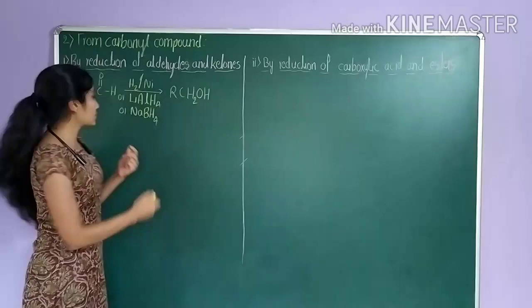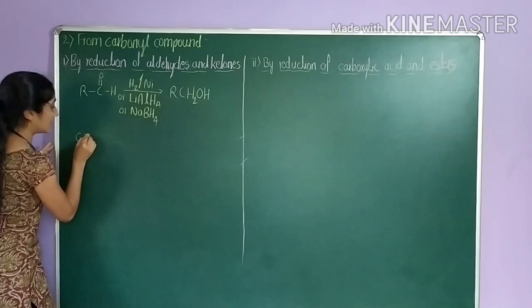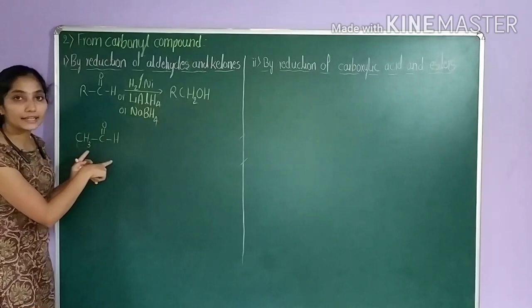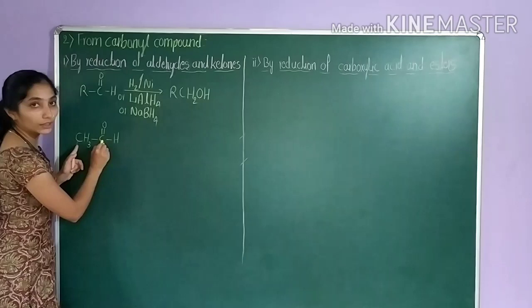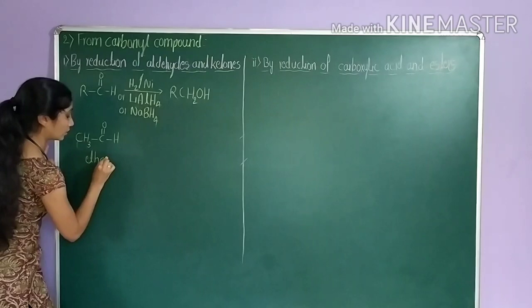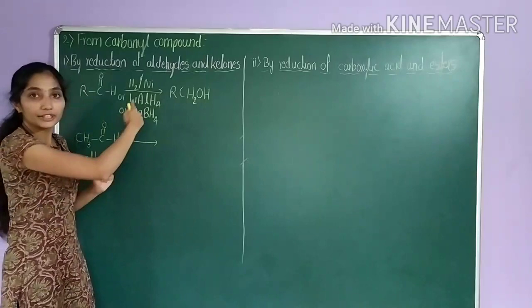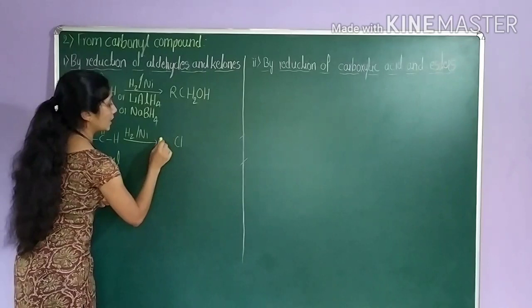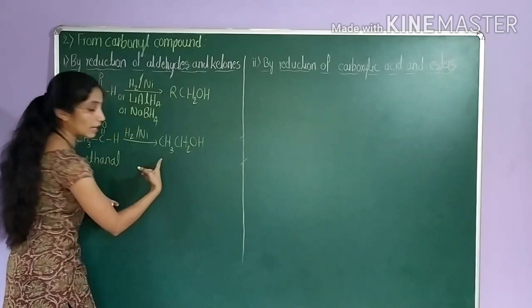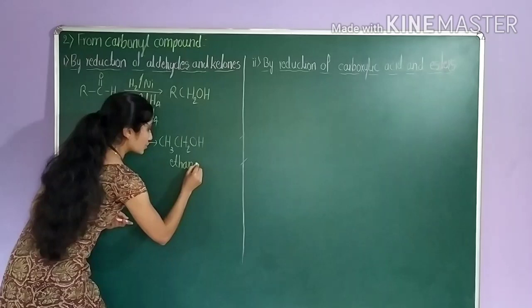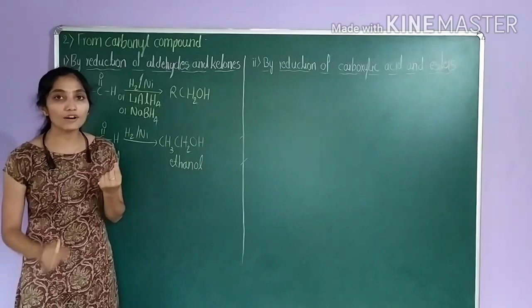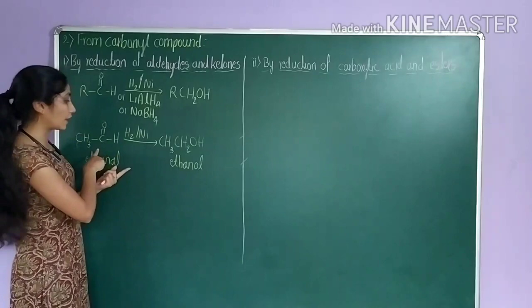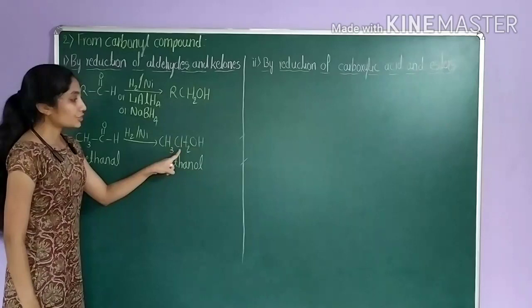Let us take a particular example. Consider acetaldehyde, CH3–C(=O)–H. Its IUPAC name is ethanal and it contains two carbon atoms. When you treat this with H2 in presence of nickel, it gives CH3CH2OH, whose IUPAC name is ethanol. So we treated ethanal with hydrogen in presence of nickel catalyst and got ethanol as the product. This is the method of conversion of aldehyde into alcohol.